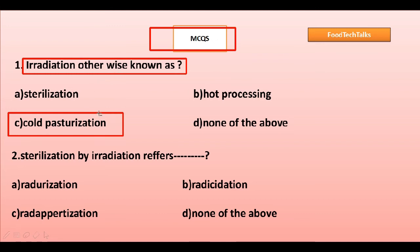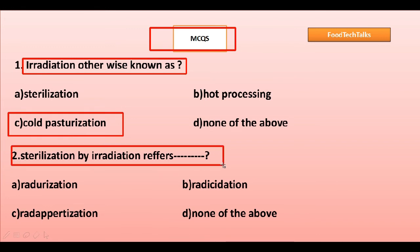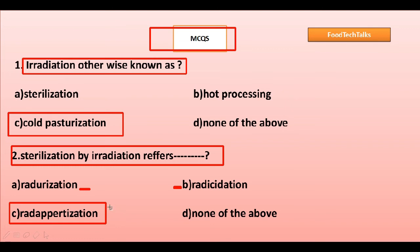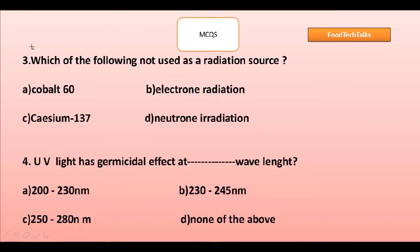Second question: sterilization by irradiation is referred to as — options are radurization, radicidation, radappertization, or none of the above. As discussed earlier, sterilization by irradiation is referred to as radappertization, so option C is the right answer.